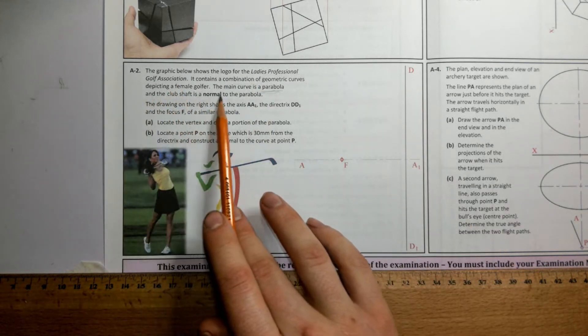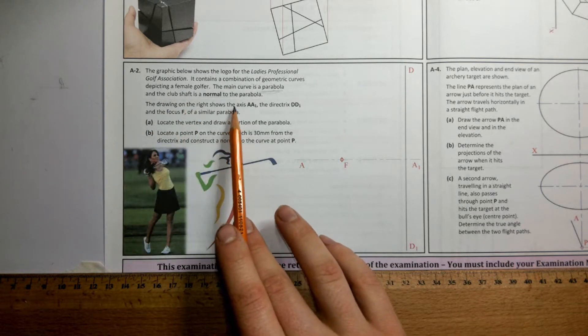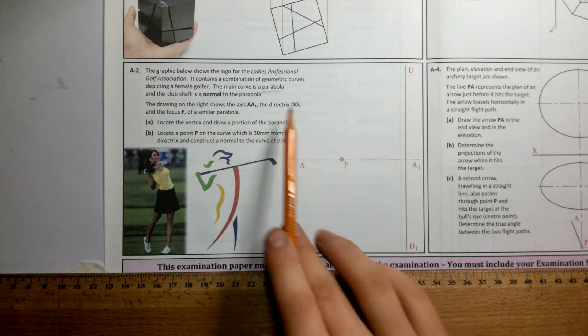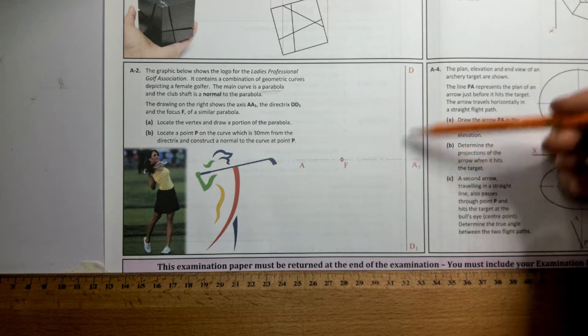The club shaft is a normal to the parabola, so they're referring to a tangent. The drawing on the right shows the axis A to A1, the major axis, and the directrix D to D1.